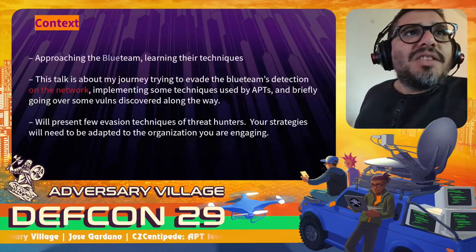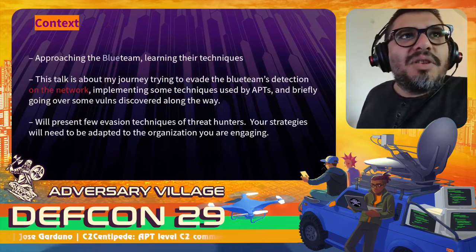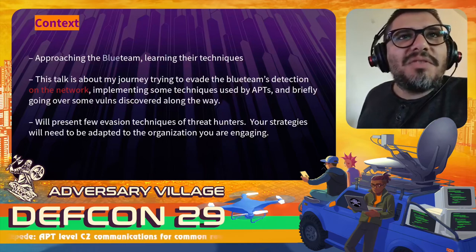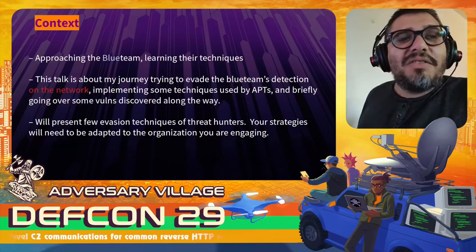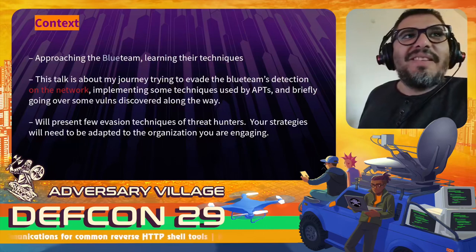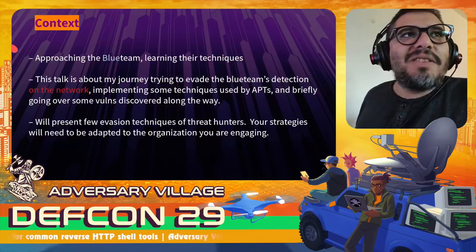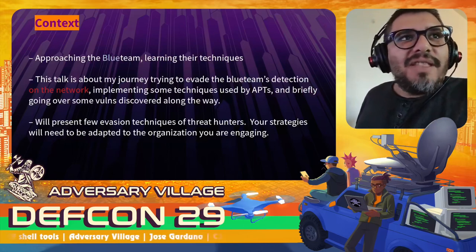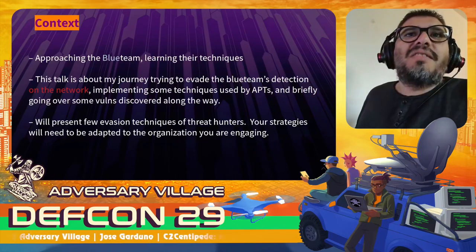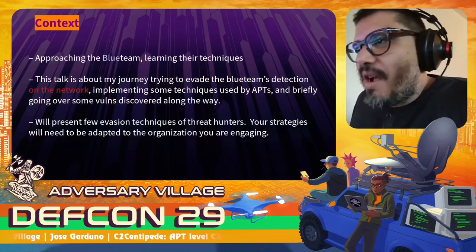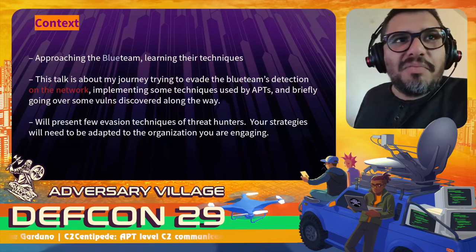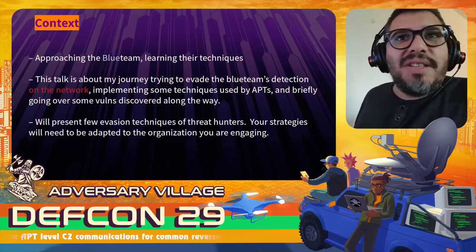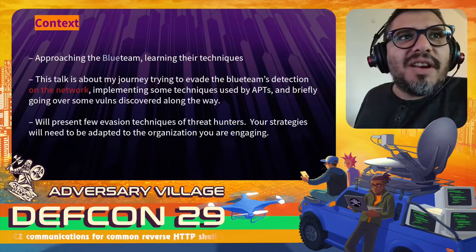The context of this talk: I approached the blue team and SOC team at Dreamlab because I wanted to learn their techniques. Sometimes I'm maybe too focused on the offensive part and just hope they don't catch you. This was about finding out what the blue team is doing, what techniques and tools they use, and how I could evade them. The talk is about this journey to evade blue team detection on the network only — I will not talk about antivirus evasion or any host-based evasion. In the tool I implemented techniques used by APTs, and I'll briefly go over some vulnerabilities I discovered along the way.